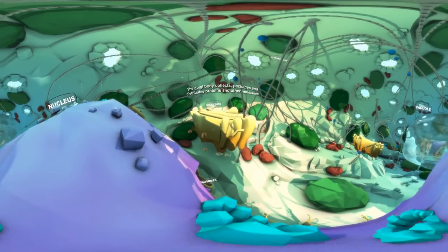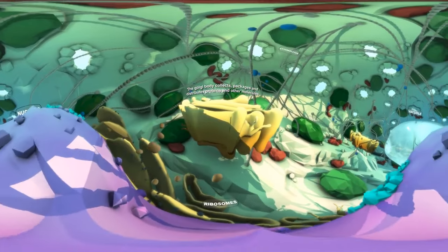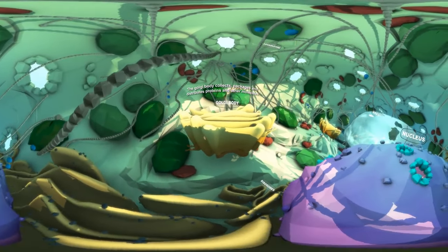The Golgi body, which is made up of many membrane-bound sacs, collects, packages, and distributes proteins and other molecules made in the cell.